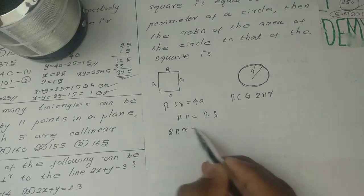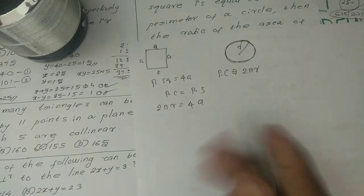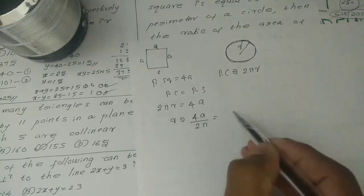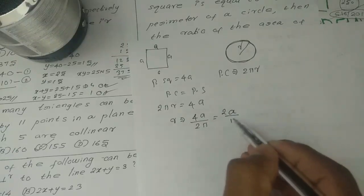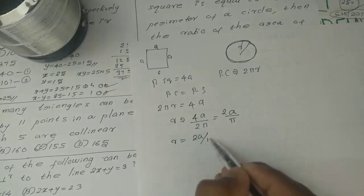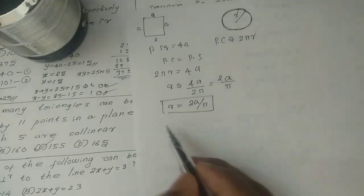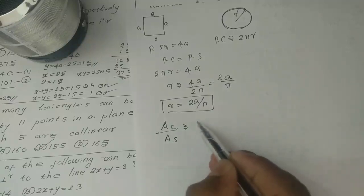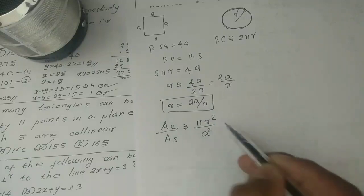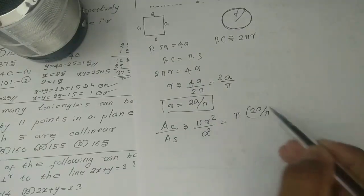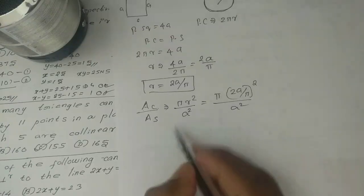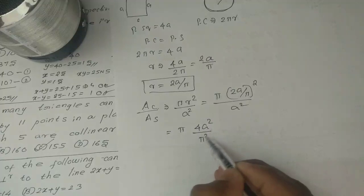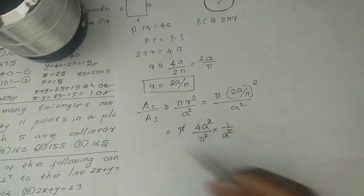From 2 pi r equal to 4a, we get r equal to 2a divided by pi. The area of the circle is pi r squared equal to pi times (2a/pi) squared equal to 4a squared divided by pi. The area of the square is a squared. So the ratio of area of circle to area of square is 4 divided by pi.